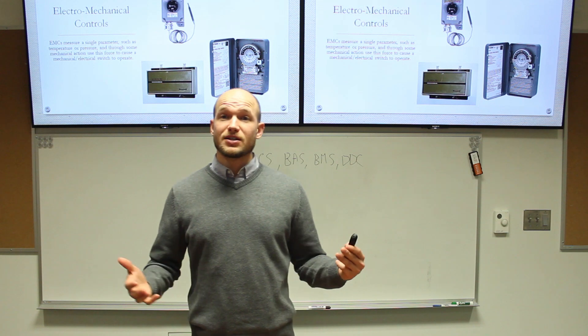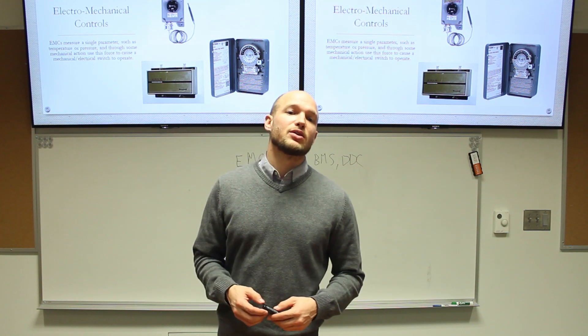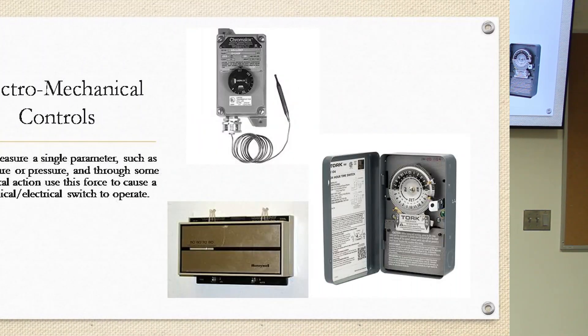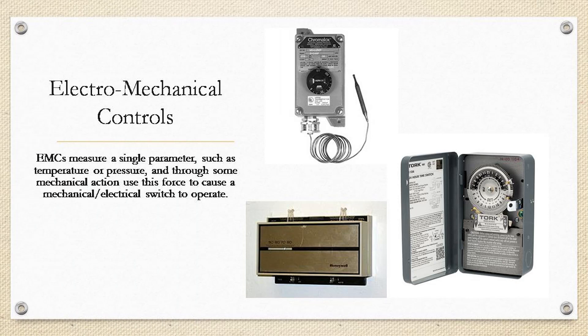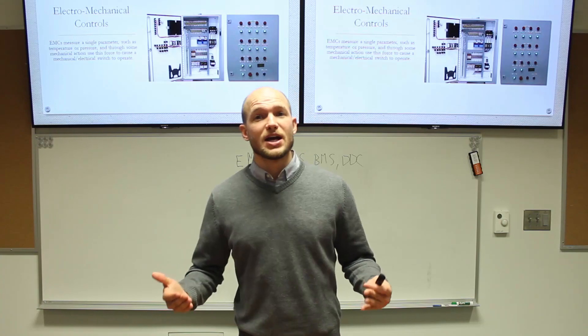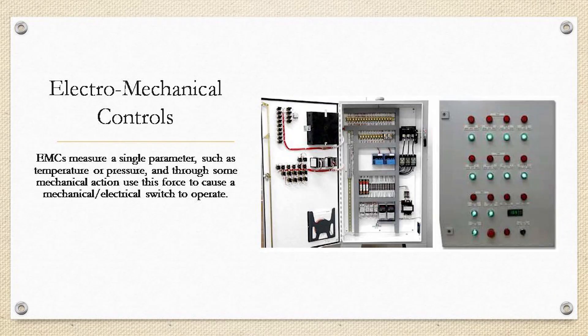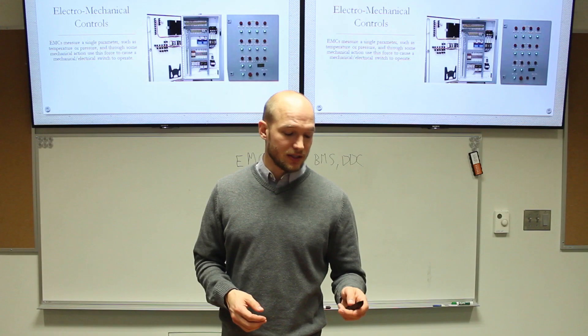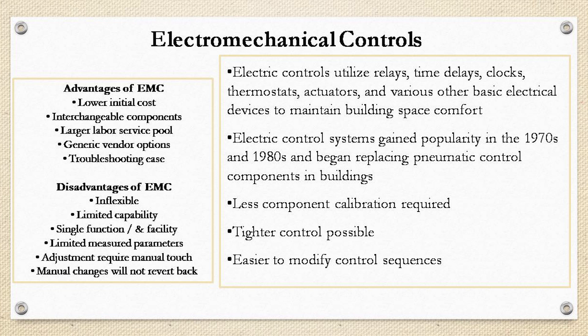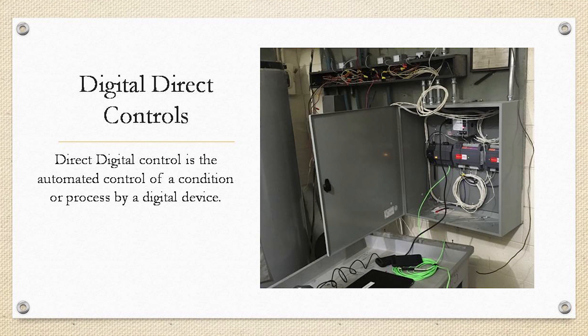The next type is electromechanical controls. The easiest reference here is a time clock or one of those old line-voltage thermostats. Electromechanical controls can go beyond a single device, just like pneumatic controls. You can see from the advantages and disadvantages list that it's getting longer — there are more advantages but also some more disadvantages compared to pneumatics.